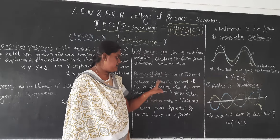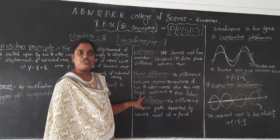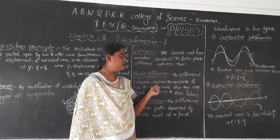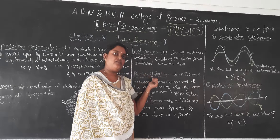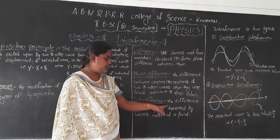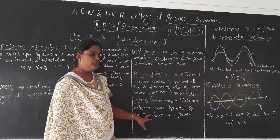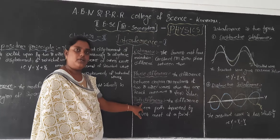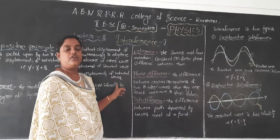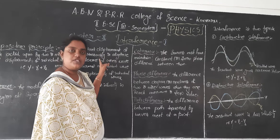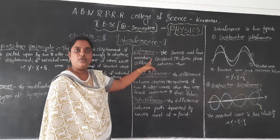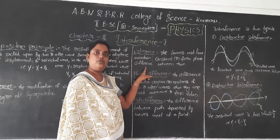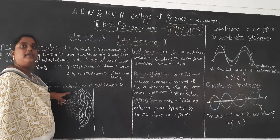Another important concept is path difference. Path difference is the difference between the paths traveled by the waves meeting at a point. So waves are traveling and a path difference is going to arise. Because of this, interference occurs, following the Superposition Principle. The waves must come from a coherent, monochromatic source, and the superposition principle gives the interference pattern.